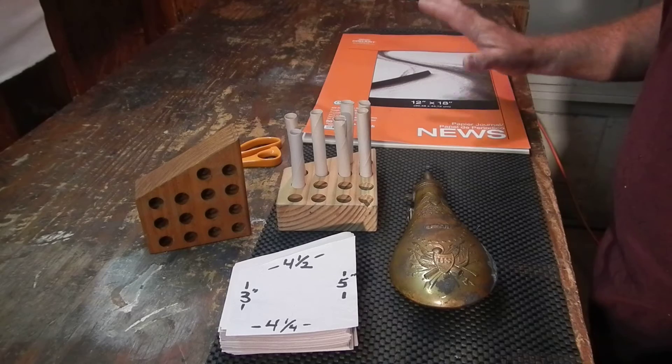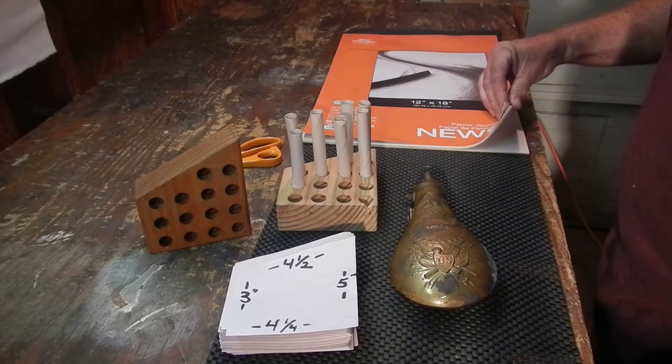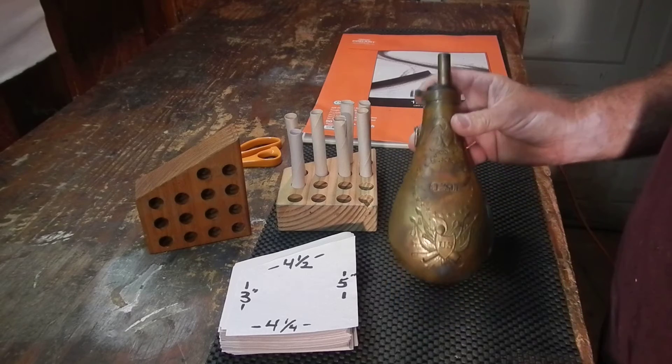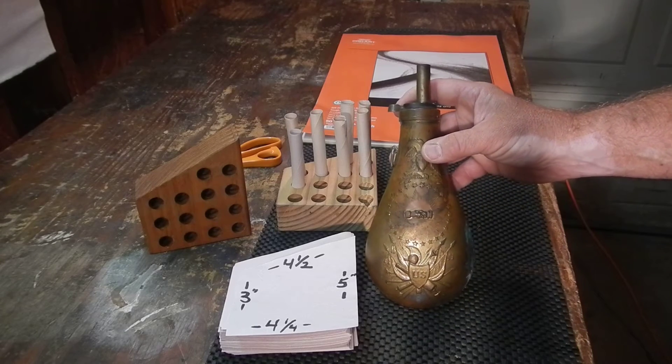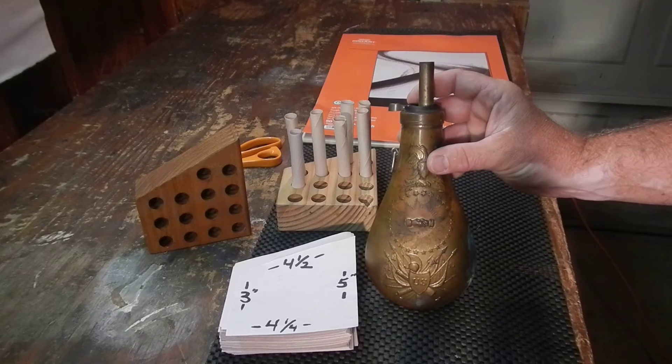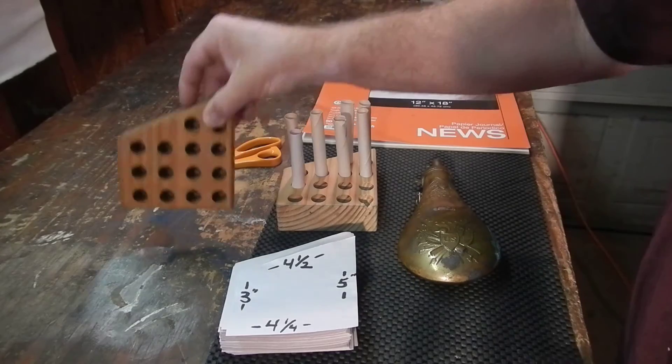The supplies you need: some newsprint paper, your powder flask that's got 3F black powder in it with a 60 grain spout, and I've also cut out these blocks from two by sixes that have 5 5/8 inch holes drilled into them.